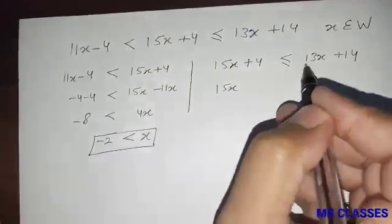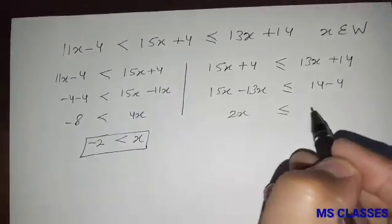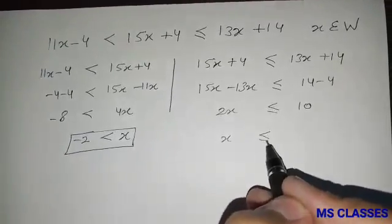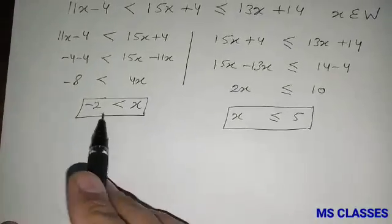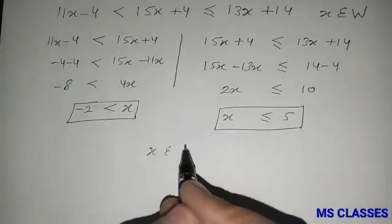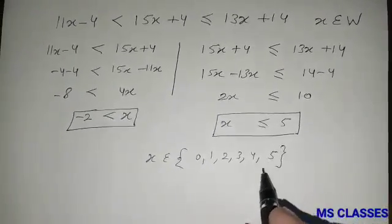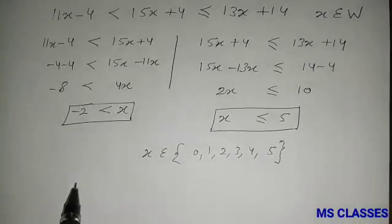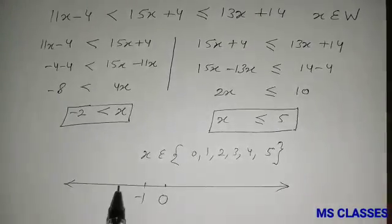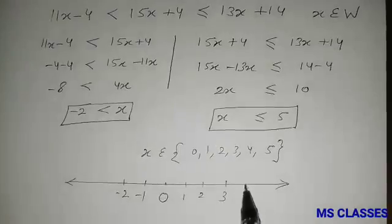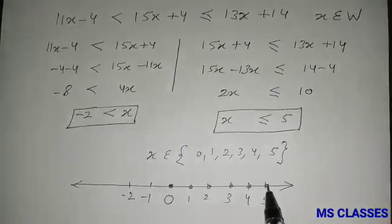Similarly, taking 13X to that side gives 2X less than or equal to 10, so X is less than or equal to 5. Since X is greater than minus 2 but less than or equal to 5, and X belongs to whole numbers, X belongs to {0, 1, 2, 3, 4, 5}. We plot and shade these points on the number line.